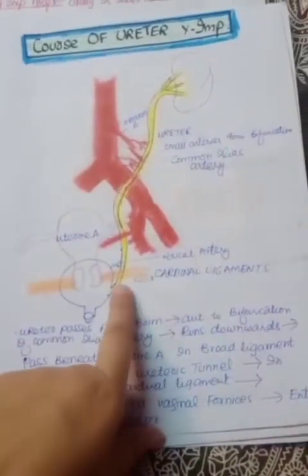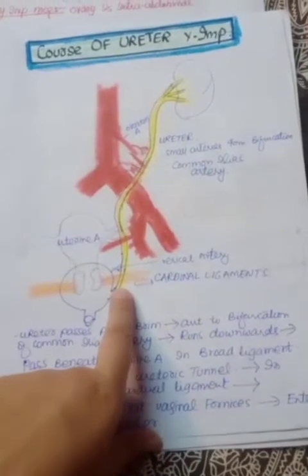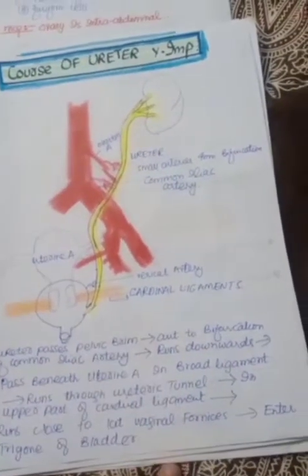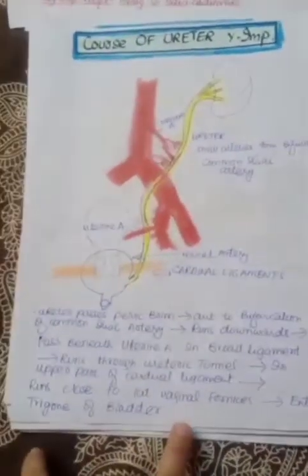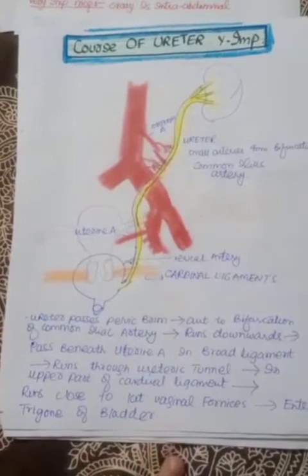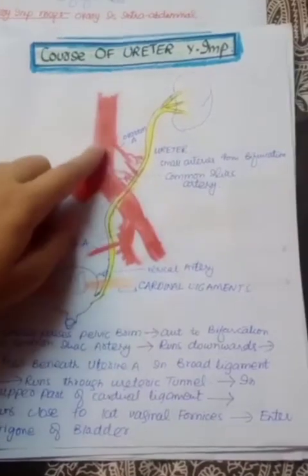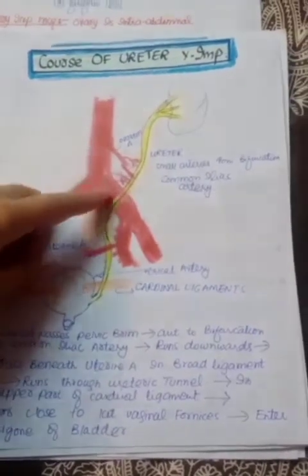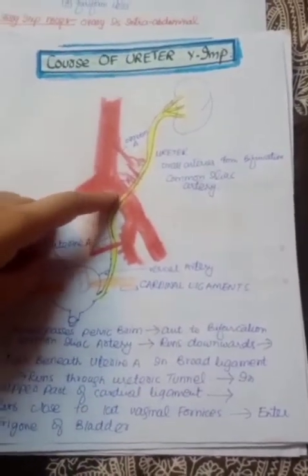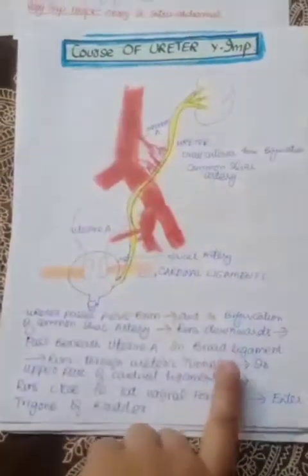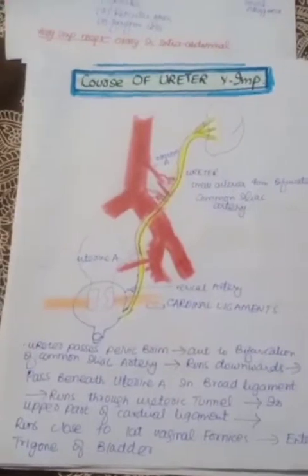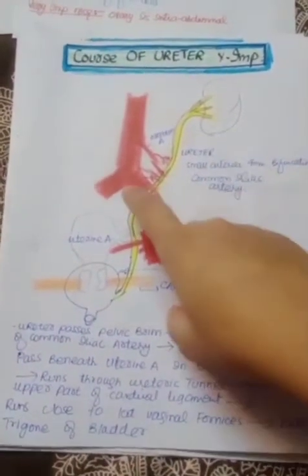In this diagram, the ureter is shown in yellow. When the ureter passes over the pelvic rim, it lies in front of the common iliac artery — this is the aorta and this is the common iliac artery. After passing in front of the common iliac artery, it runs downwards.